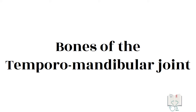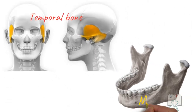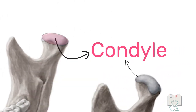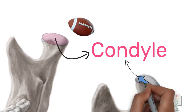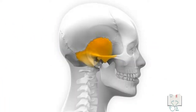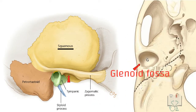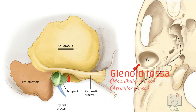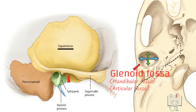The bones of the temporomandibular joint are the temporal bone of the skull and the mandible. In the mandible, it is the condyle which forms one articular surface. The condyle has an ovoid shape, sometimes described like a rugby ball — its medial-lateral dimension is more than its anteroposterior dimension. Coming to the temporal bone, the squamous part's undersurface has a concavity called the glenoid fossa, also called the mandibular fossa or articular fossa, which forms one part of the articular surface. It houses the condyle, so its medial-lateral dimension is also more than the anteroposterior dimension.